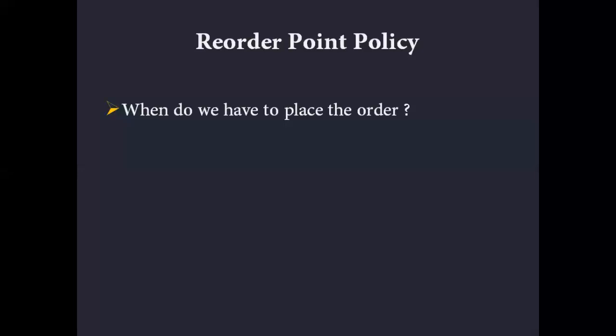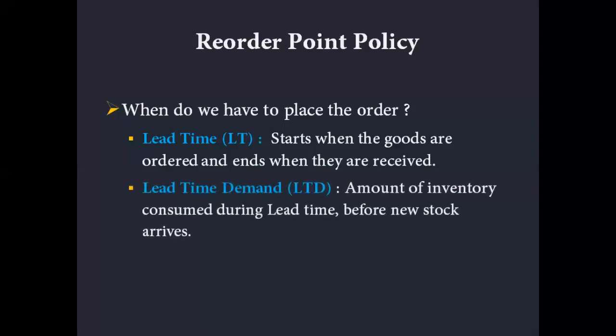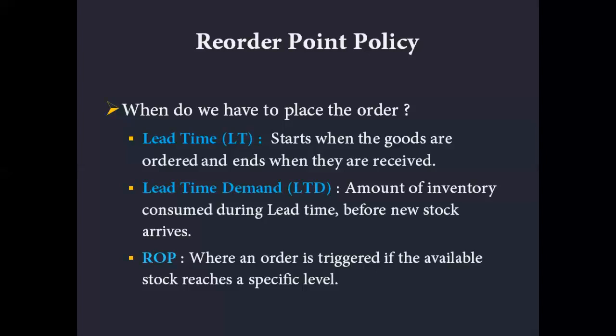When we place an order there is usually a period of time that elapses from the time we place the order to the time when it is effectively received, and that is known as lead time. The amount of inventory we use during this period is known as lead time demand, abbreviated as LTD. In the most simplistic terms, the reorder point policy is just equal to lead time demand — the amount we use from the time we place the order to the time it is received.